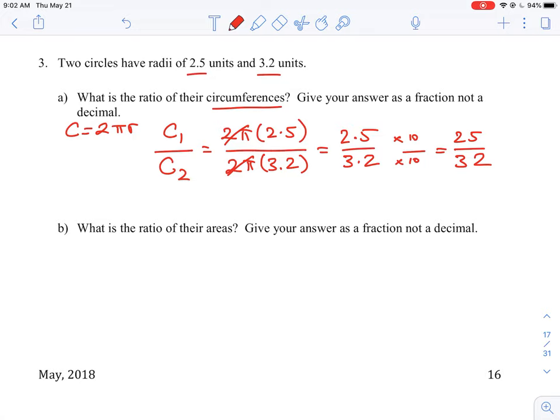So that tells us that the circumference ratio is equal to 25 to 32, which is the ratio of essentially the two radius units. Now the thing that you need to understand at a little deeper level is that circumference is proportional to the measurement of radius.